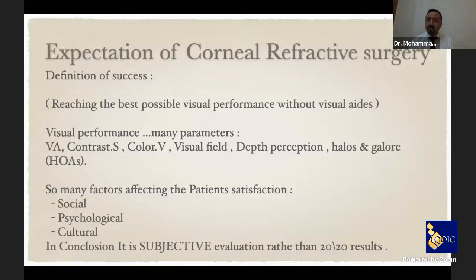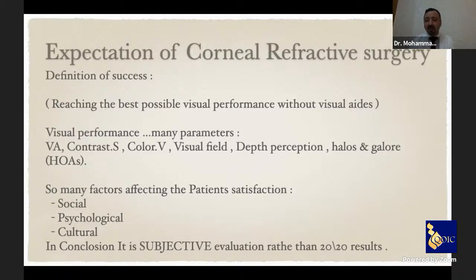Apart from technical and ocular issues, there are also social, psychological, cultural, and personality factors. To determine whether it's overcorrection or undercorrection — or when to intervene — is a multifactorial decision. Sometimes we need to intervene even if the recorded vision is almost 20/20.